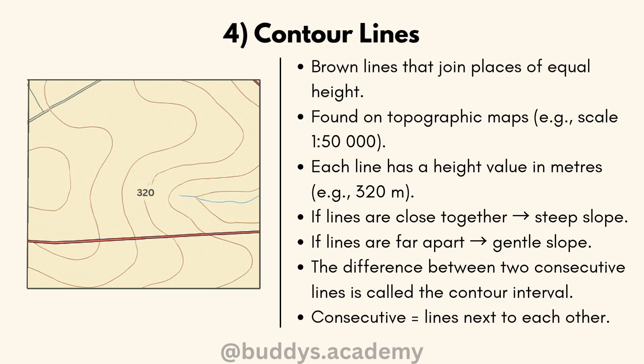The last way to find height on a map is by looking for contour lines. Contour lines are brown lines on a map that join places of equal height. On topographic maps with a scale of 1:50,000, the lines are drawn and numbered in brown, and each contour line has a value. If the lines are very close together, the slope is steep; if the lines are wide and far apart, the slope is gentle.